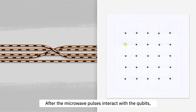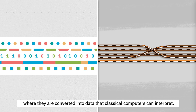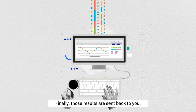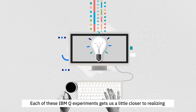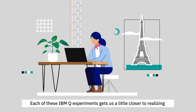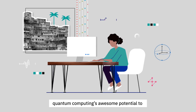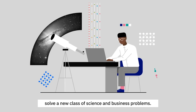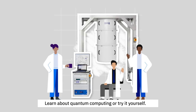After the microwave pulses interact with the qubits, any results are returned back along the cables where they are converted into data that classical computers can interpret. Finally, those results are sent back to you. Each of these IBM Q experiments gets us a little closer to realizing quantum computing's awesome potential to solve a new class of science and business problems. Learn about quantum computing or try it yourself.